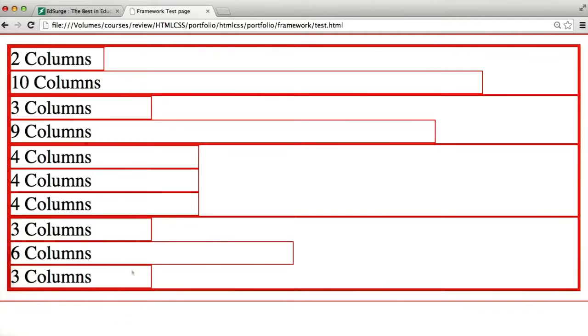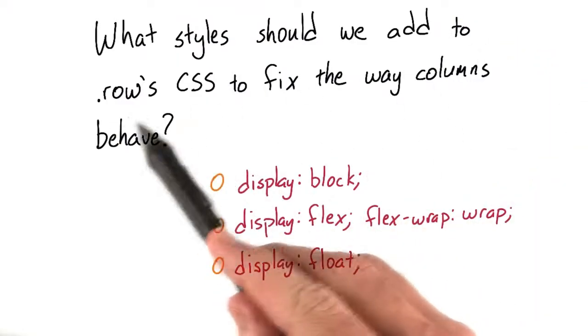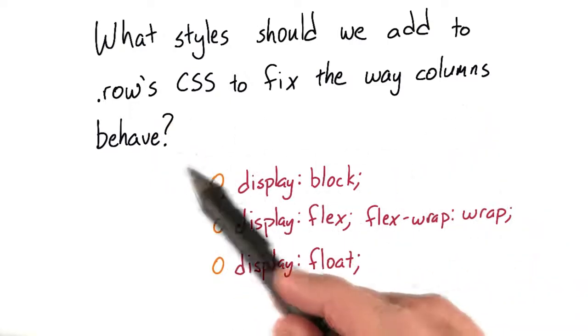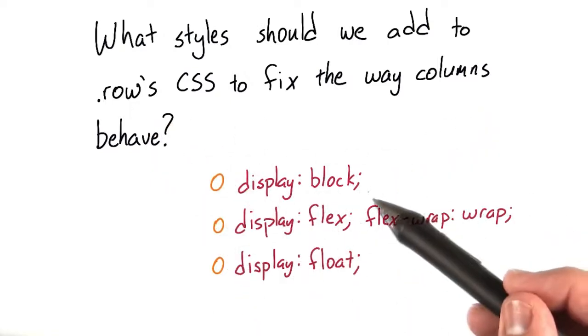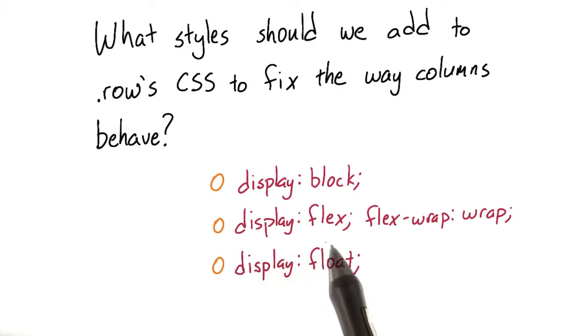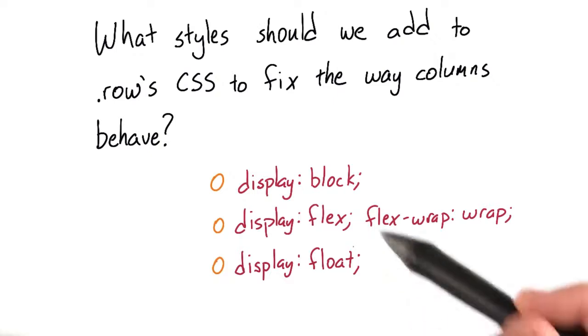It looks like we've got a problem here. What style should we add to the row class's CSS to fix the way the columns are behaving? Should we add display block? Should we add display flex and flex-wrap, or just display float? The easiest way to figure this out is to open up DevTools and add these CSS styles to the row class.